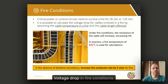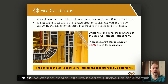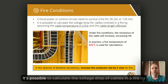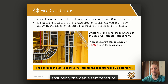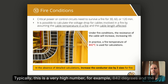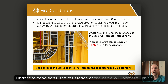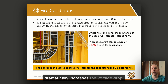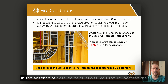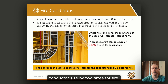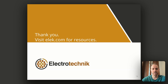Tip number ten: voltage drop in fire conditions. Critical power and control circuits need to survive fire for a certain amount of time. It's possible to calculate the voltage drop of cables in a fire by assuming the cable temperature — typically this is a very high number, for example 842 degrees — and the length of the cable that's affected by the fire. Under fire conditions, the resistance of the cable will increase, which dramatically increases the voltage drop. In the absence of detailed calculations, you should increase the conductor size by two sizes for fire.